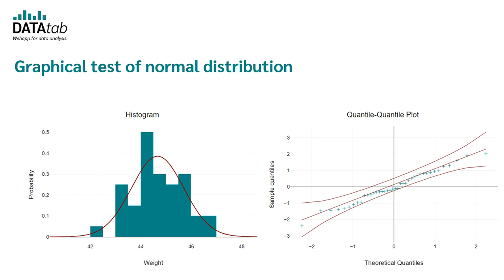We'll come to that now. If the normal distribution is checked graphically, you either look at the histogram or even better at the QQ plot.